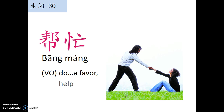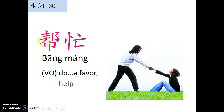第三十个生词：帮忙。帮忙 is a V-O action word. 帮 means help — it's a verb. 忙, we learned this word before; it means busy, something to do. So 帮忙 we can explain as do a favor.